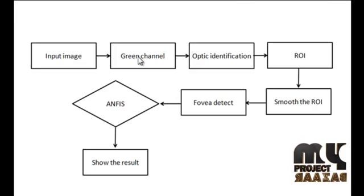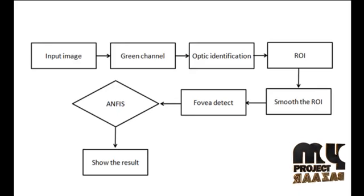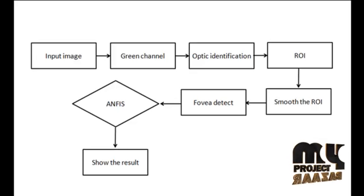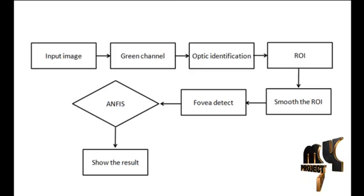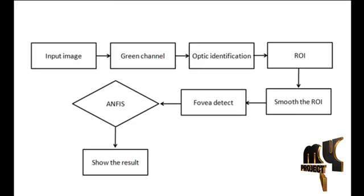Then the green channel image goes to the optic identification process. In this process, identify the optic disc location using the superior and inferior nasal arcades that are located in the opposite side of the temporal arcades. Optic disc detection and morphological technique have two main stages: one is detection of the optic disc location and another is detection of the disc boundary.